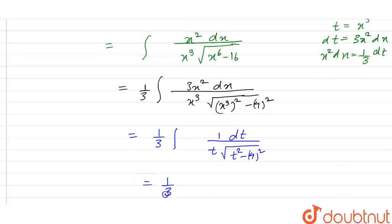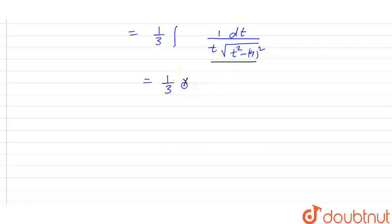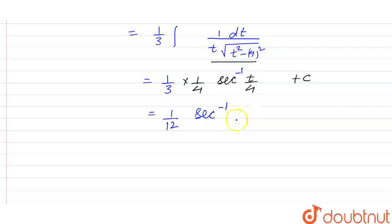Integral of this will be 1 by 3 and integral of this is 1 by 4 that is 1 by a sec inverse, we have sec inverse t by 4 plus c here. We have here is 1 by 12 sec inverse t by 4 plus c and we have t is nothing but x cube.